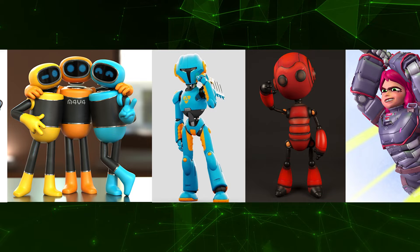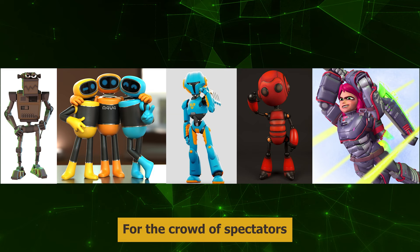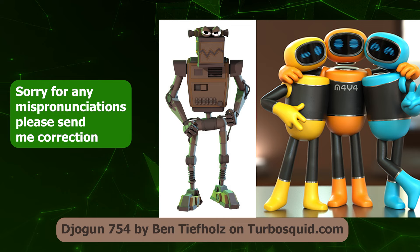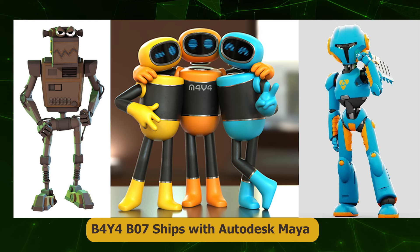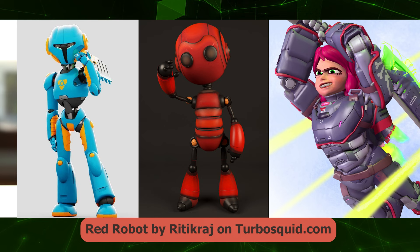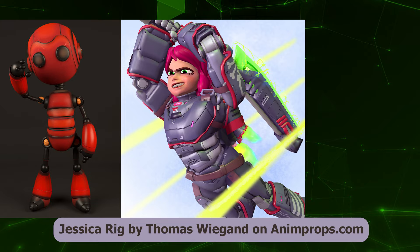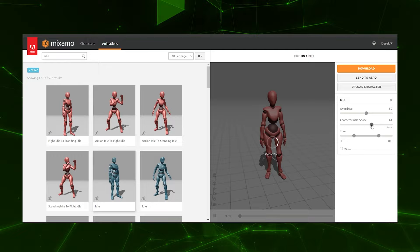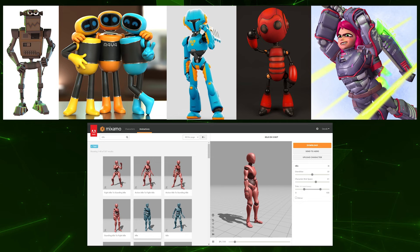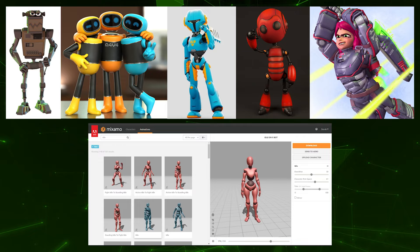As I mentioned previously, I will be creating my own idle animations on robot rigs. From left to right, I have the Jogon 754 robot by Ben TF Holtz on TurboSquid, the B4Y4 BOZ robot that ships with Autodesk Maya, Battle Droid Yoku by Blenderzone on CGTrader, Red Robot by Ritty Kraj on TurboSquid.com, and lastly the Jessica rig by Thomas Wiegand on AnimProps.com. I will also be supplementing my own idle animations with idle animations from Adobe Mixamo's mannequin or robot rig. I'll be reducing the detail and value contrast of the robot spectators to ensure that they do not distract from the main performance.